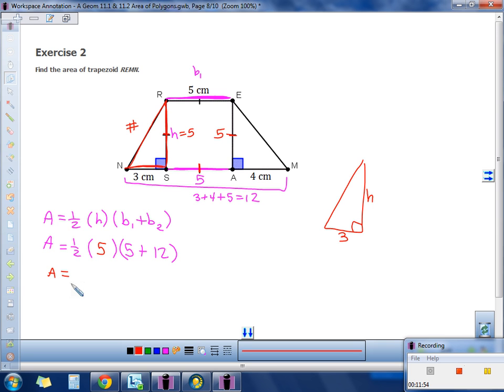Last step. Do a little multiplication in here. A little bit of addition. So 5 times 5 plus 12 is 17. So do 1 half times 5 times 17. And what do you get? 42.5. And centimeters squared.